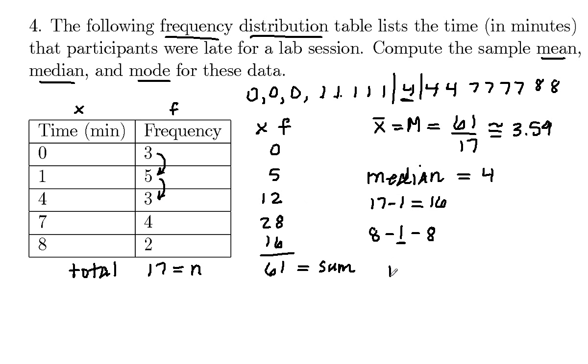And then the mode is the easiest one. The mode is the most frequent value. So you're looking for the biggest number in the frequency column, which is that five right there, and that goes with the number one. And you can see there's the most number ones up here, so your mode is one.